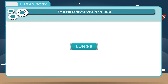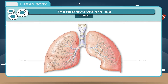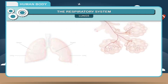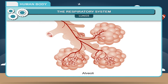Lungs. Humans have two lungs. Lungs are balloon-like elastic structures. The right lung has three lobes and the left has only two lobes. The lungs have many small air chambers called alveoli. Blood capillaries surround the alveoli. In the alveoli, oxygen is delivered to the circulatory system and carbon dioxide diffuses out of the blood into the lungs, where it is exhaled.